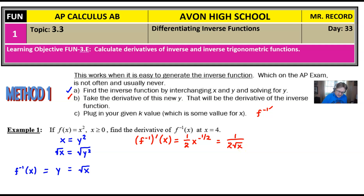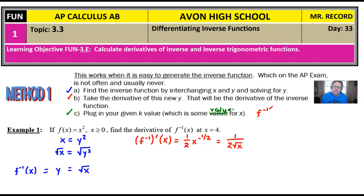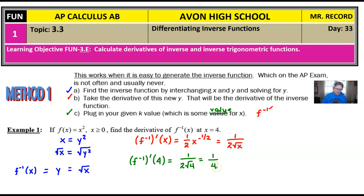Step c says: plug in your given x-value. The problem gives x = 4, so we evaluate (f⁻¹)'(4) = 1 / (2√4) = 1/4. That is our final answer. We've completed everything the question asked.